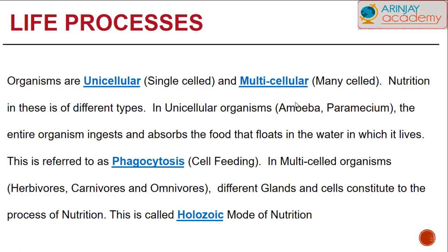Unicellular organisms, often referred to as single-celled organisms, like amoeba and paramecium, ingest and absorb food that floats in the water in which they live. This is referred to as phagocytosis, or cell feeding. In multicellular organisms like herbivores, carnivores, and omnivores, they have different glands and cells that help the process of nutrition. As a result, they take in solid food — this is called the holozoic mode of nutrition.